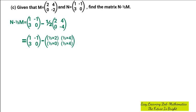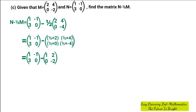Then close bracket. Equal to — I'm going to write matrix n again just like I did earlier, then it's going to be minus, then open bracket. So 1 over 2 multiplied by 2 will give us 1. 1 over 2 multiplied by 4 will give us 2. Then 1 over 2 multiplied by 4 will give us negative 4, then close bracket. Now I'm done multiplying a scalar by matrix m.